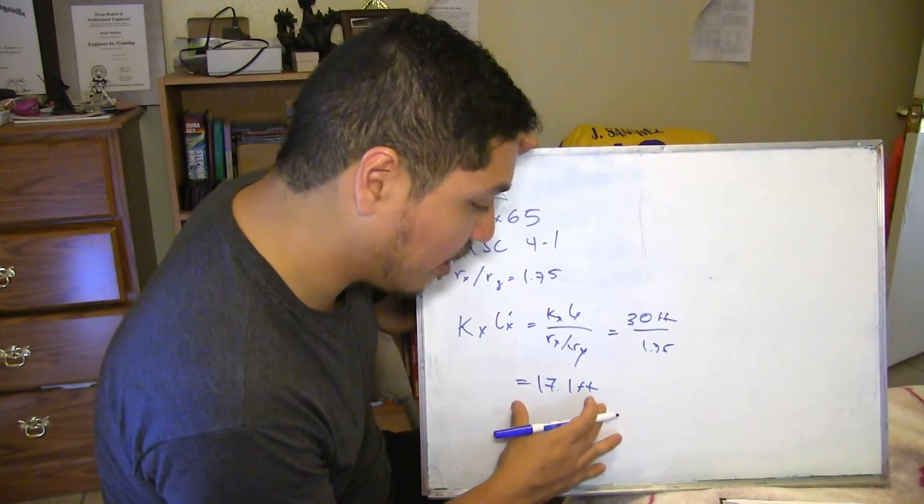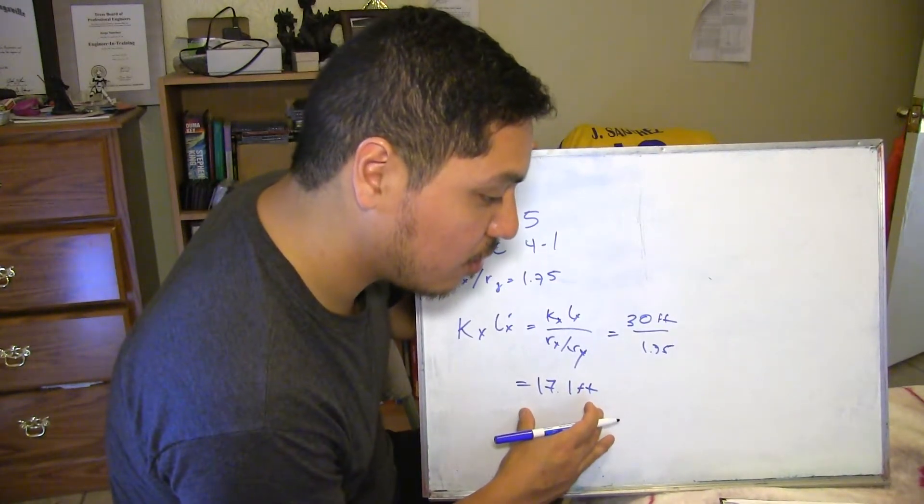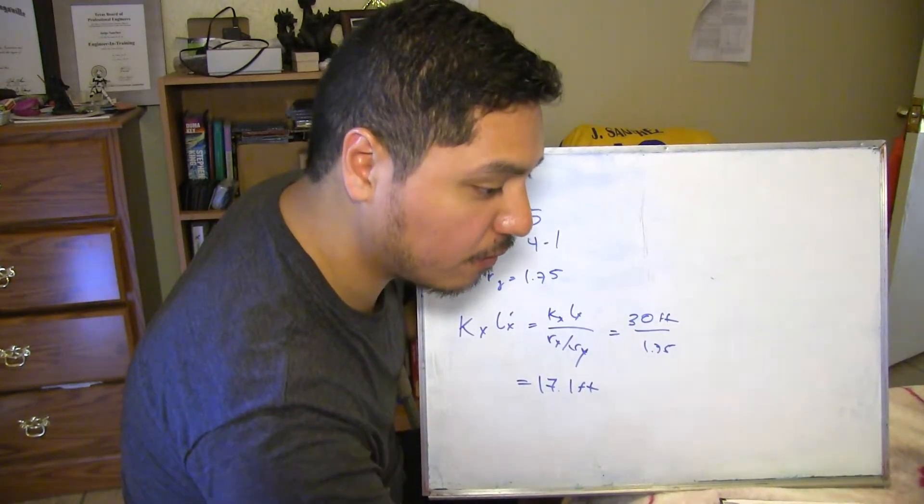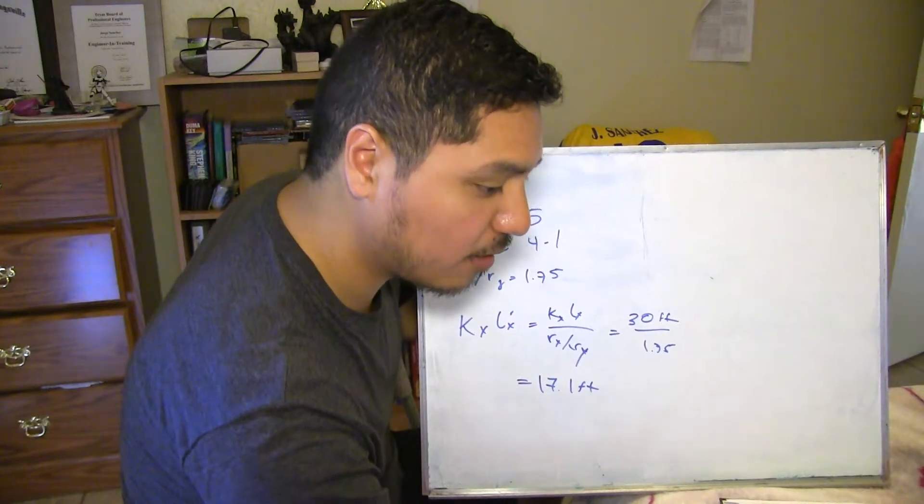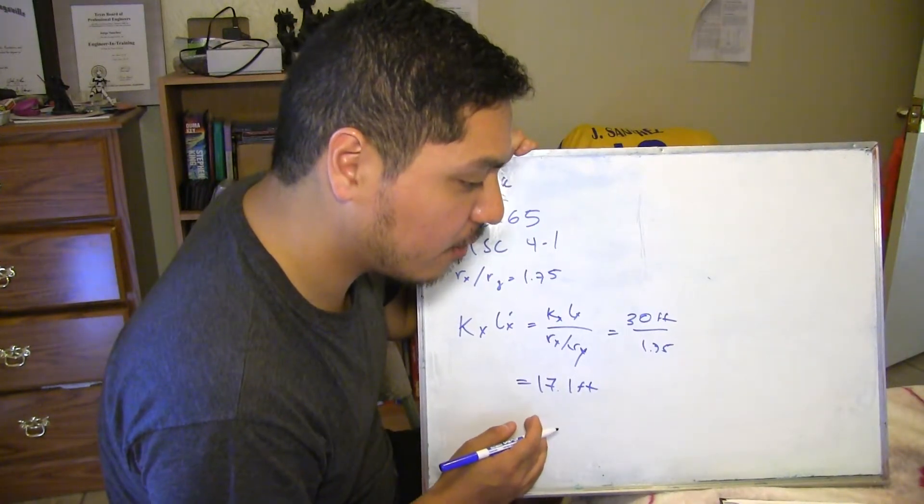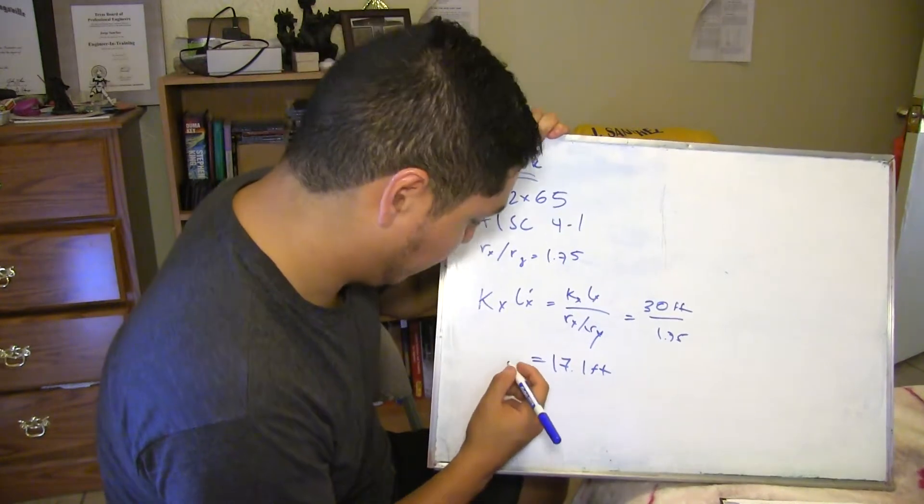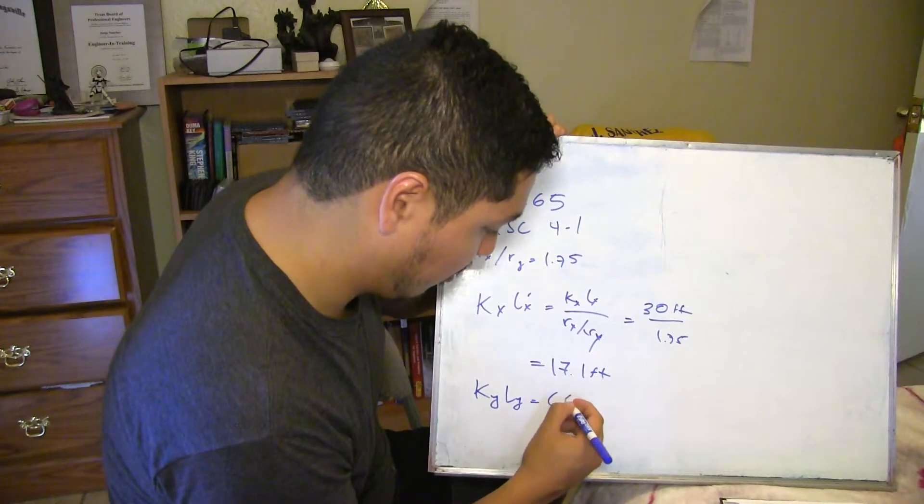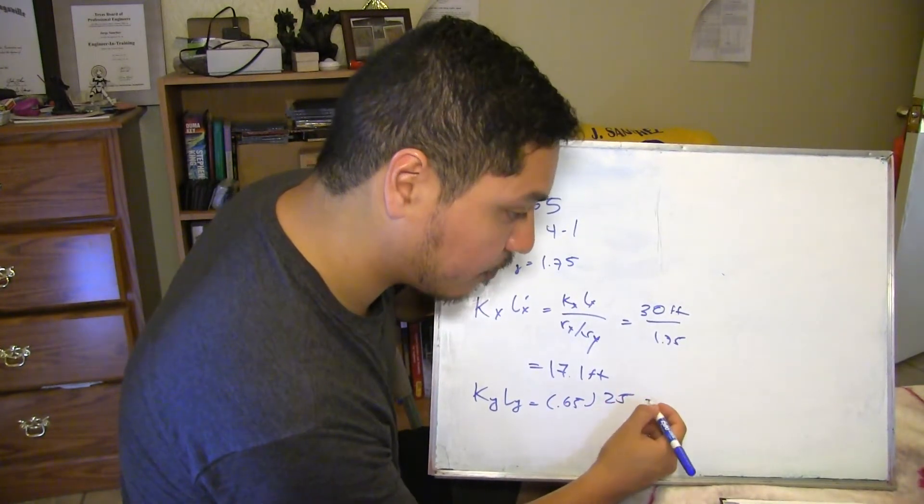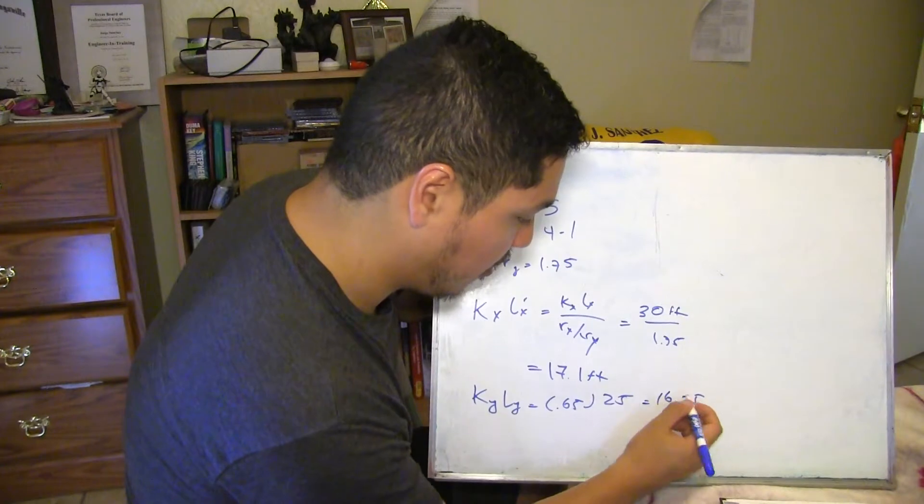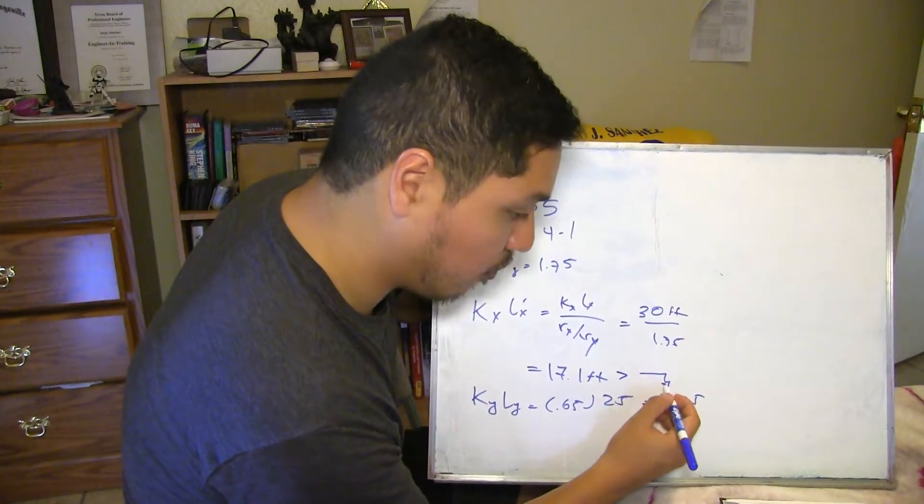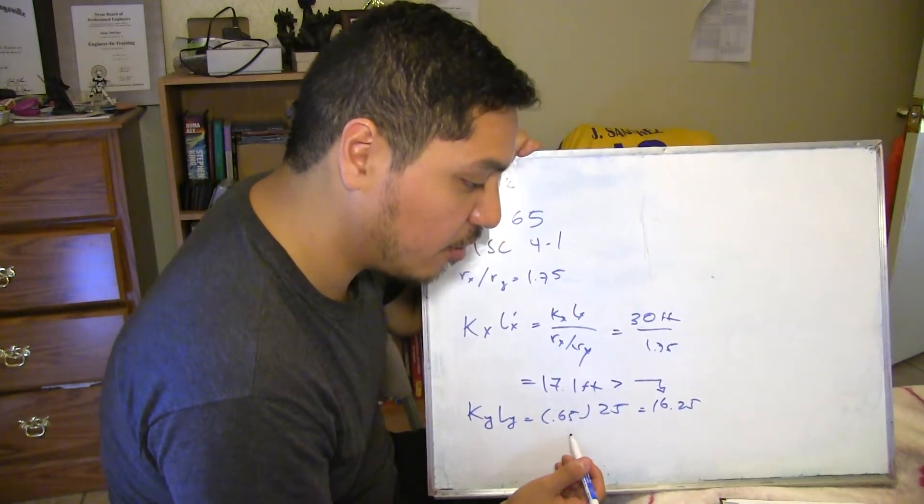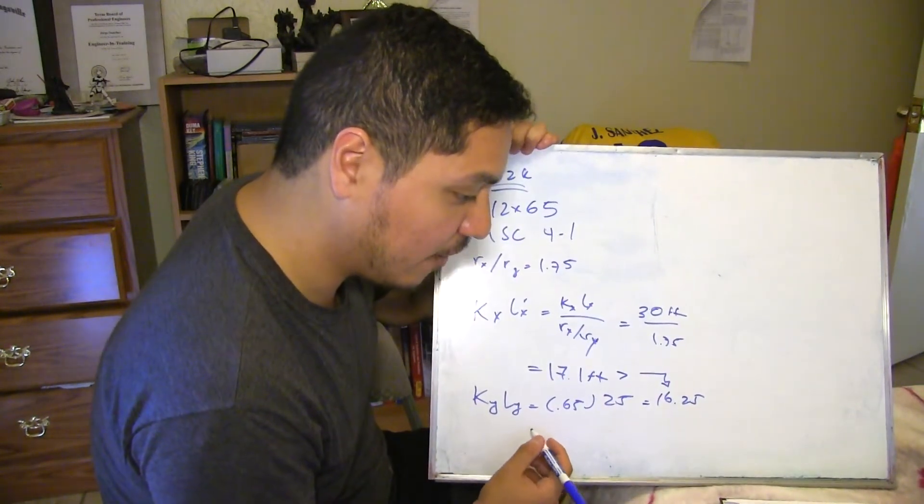So basically what this tells you, it means that the strong axis buckling controls, because this is bigger than the other loading from the other length effectively. Because this is going to be bigger than your Ky Ly, it's going to be 0.65 times 25, so 16.25. So this one is bigger than this one, so the strong axis buckling will control.